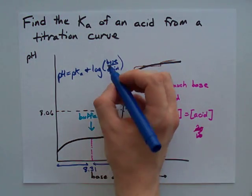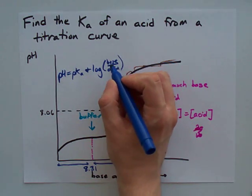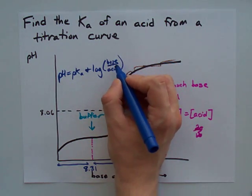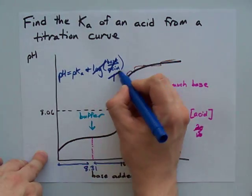The pH at that point has the concentration of base and concentration of acid equal. Which means base divided by acid is 1, and the log of 1 is 0.